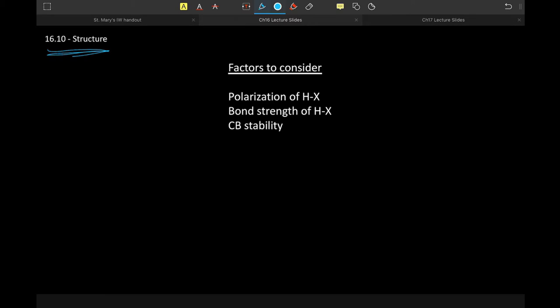The factors to consider if we are gauging the strength of an acid is to determine the polarization of that H-X, and note that X can be an atom or a series of atoms—it's just the polarization of that bond between the hydrogen and the rest of the molecule. The bond strength of that hydrogen to the rest of the molecule, and the stability of the resulting conjugate base.